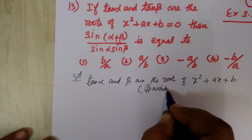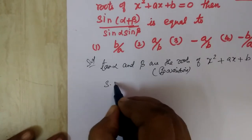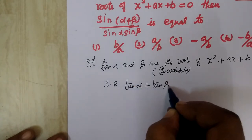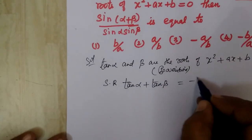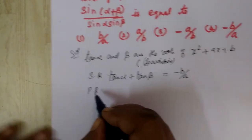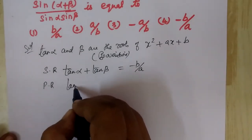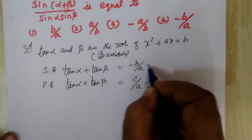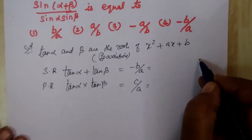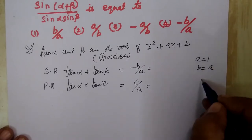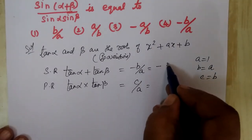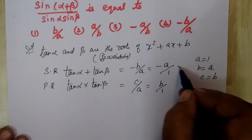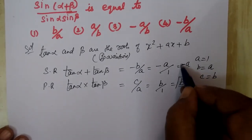Sum of the roots: tan alpha plus tan beta equals minus b by a — here a equals a, b equals a, c equals b. So sum of roots equals minus a, and product of roots tan alpha into tan beta equals c by a, which equals b.